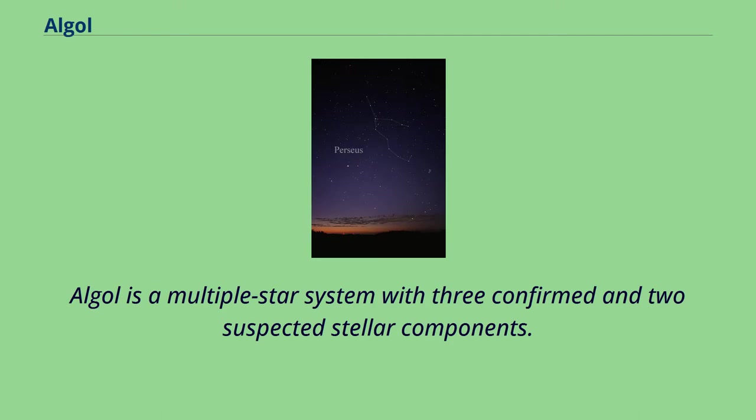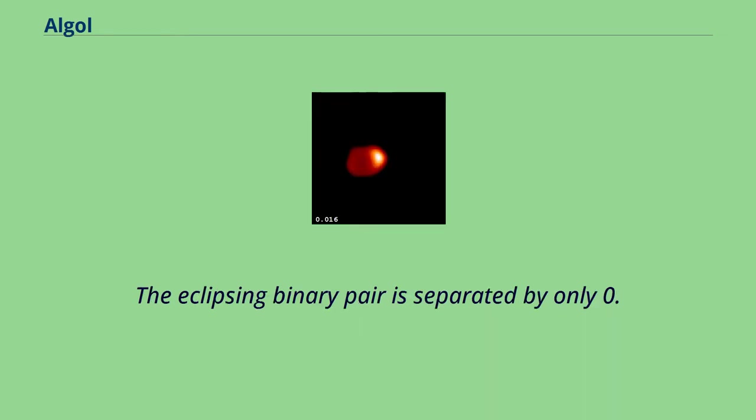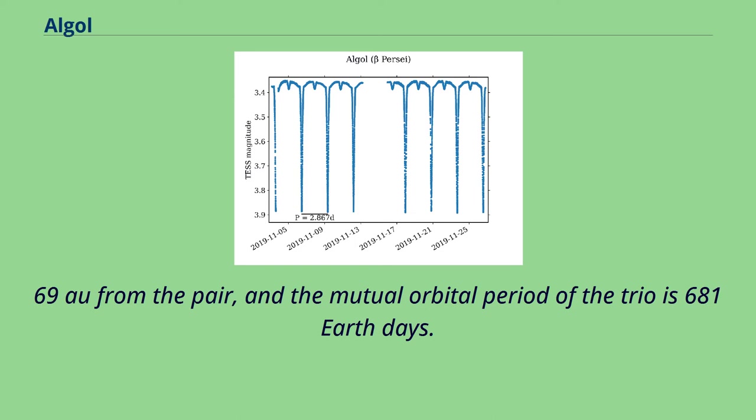Algol is a multiple star system with three confirmed and two suspected stellar components. From the point of view of the Earth, Algol A1 and Algol A2 form an eclipsing binary because their orbital plane contains the line of sight to the Earth. The eclipsing binary pair is separated by only 0.062 astronomical units from each other, whereas the third star in the system is at an average distance of 2.69 AU from the pair, and the mutual orbital period of the trio is 681 Earth days.